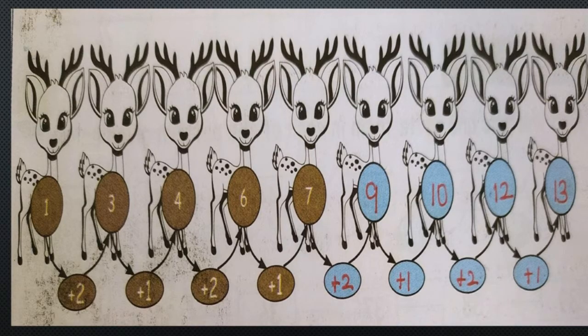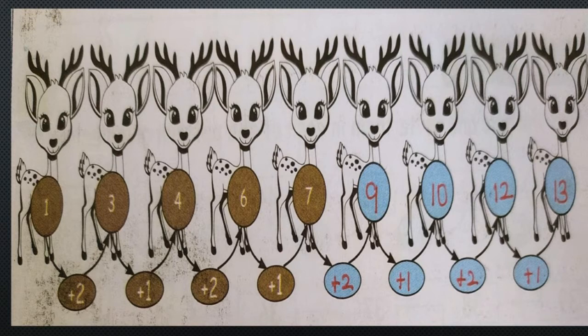Now we will see the next one: 1, 3, 4, 6, 7. You have to find what rule it is. It is in increasing order — add plus 2 for the first step, then plus 1 for the next. The pattern is plus 2, plus 1. So: 1 plus 2 is 3, 3 plus 1 is 4, 4 plus 2 is 6, 6 plus 1 is 7, 7 plus 2 is 9, 9 plus 1 is 10, 10 plus 2 is 12, and 12 plus 1 is 13.